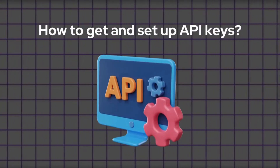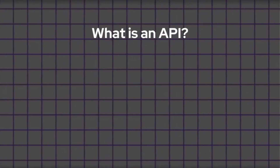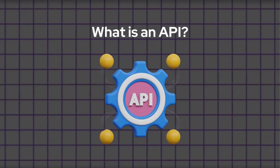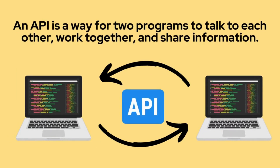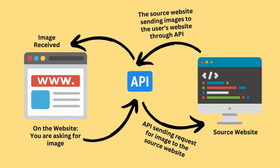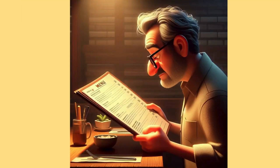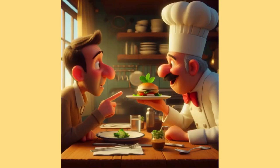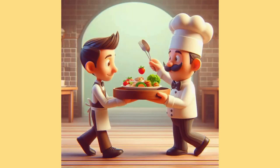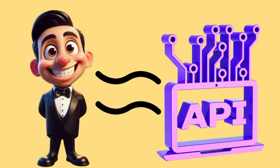In this chapter we're going to talk about how to get API keys and set them up. First, what is an API? An API is a way for two programs to talk to each other and share information. When you use a website or app, you are using an API to ask for something from another program, which then sends back what you asked for — like a photo, a video, or some other information. Think of an API like a waiter in a restaurant: you tell the waiter your order, the waiter tells the chef, the chef makes your food, and the waiter brings it back to you.